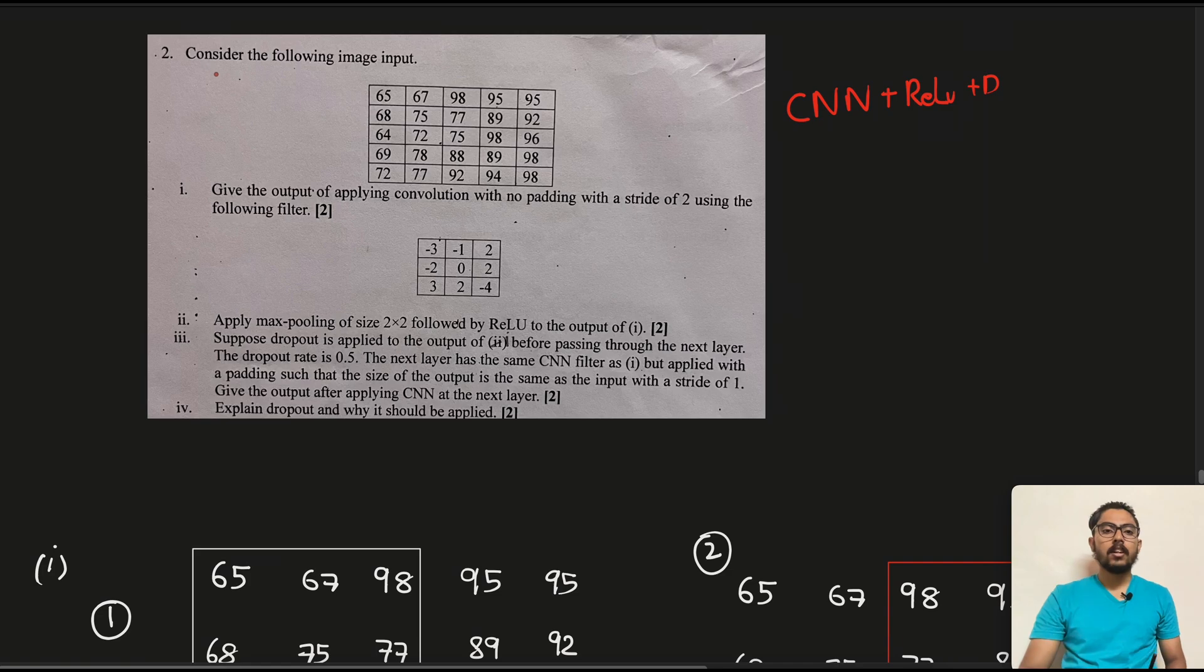So let's read the question first. Consider the following image input and image kernel is given to us. Give the output of applying convolution with no padding with a stride of 2 using the following filter. Apply max pooling of size 2×2 followed by ReLU to the output. Suppose dropout is applied to the output before passing through the next layer; the dropout rate is 0.5. The next layer has the same CNN filter but applied with padding such that the size of output is the same as the input with a stride of 1. Give the output after applying CNN at the next layer and then finally explain dropout and why it should be applied.